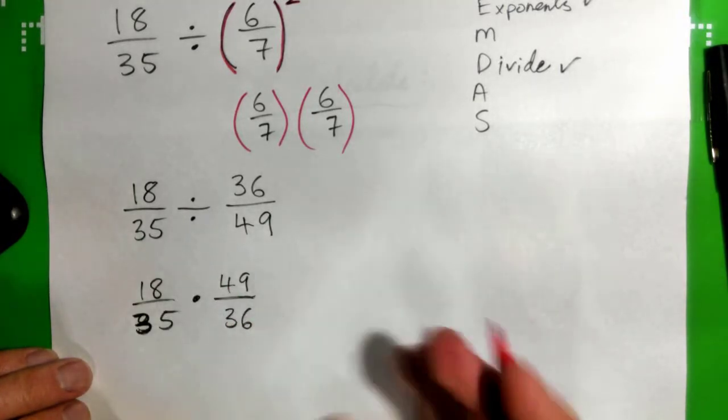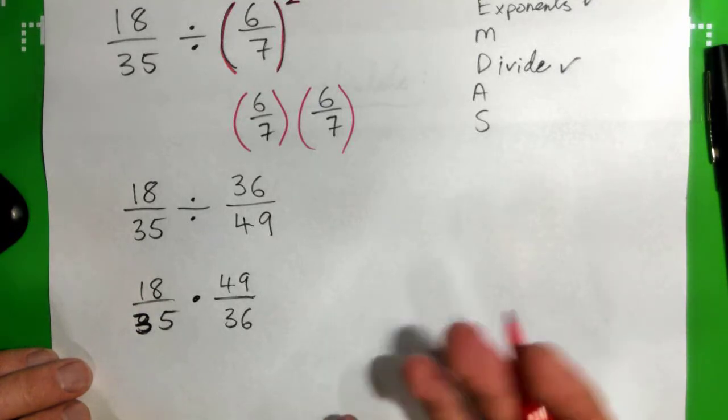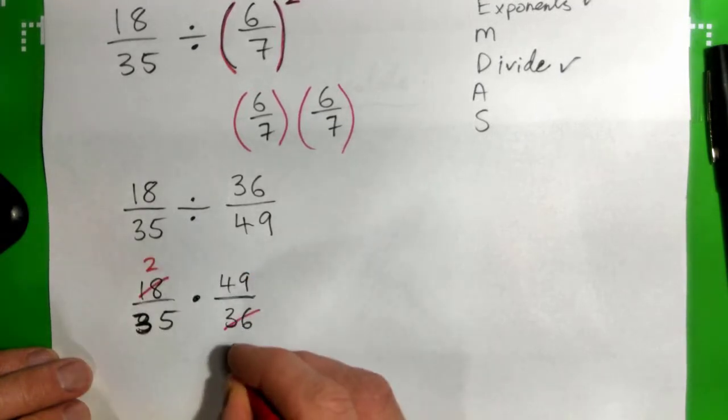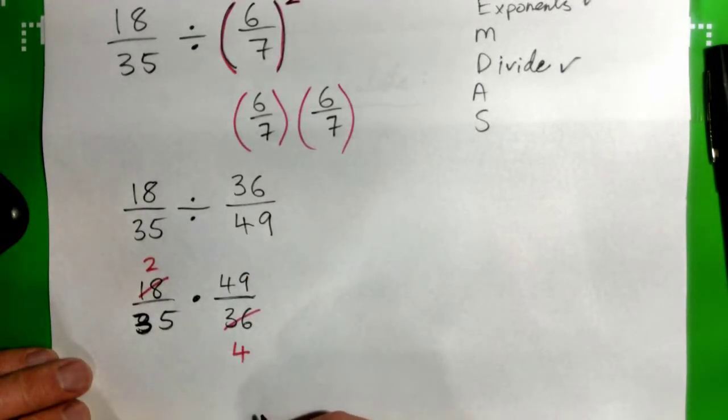A lot of students aren't going to see that. They'll probably think maybe sixes or nines or something. So I'll just do nines. Nine into eighteen goes twice, nine into thirty-six goes four times. What else?